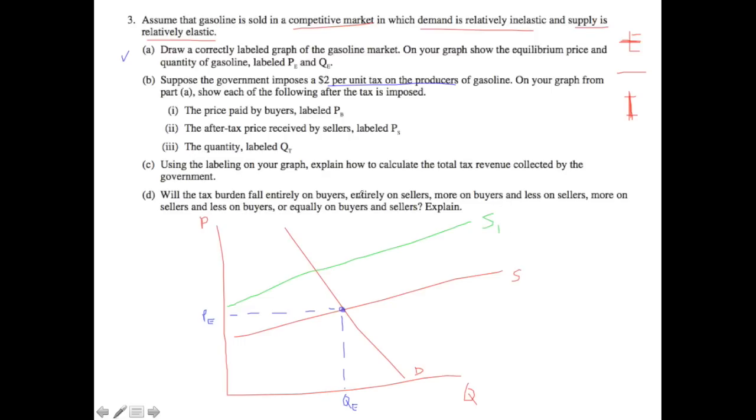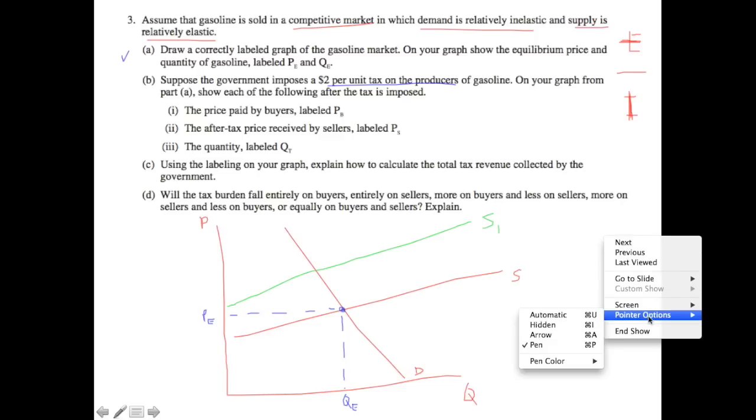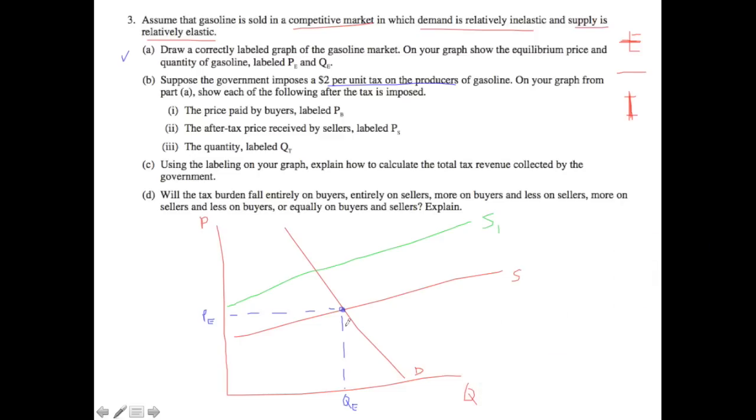Just imagine that that is parallel to the first supply curve. And essentially what we have now is we need to denote the price paid by buyers labeled PB, and the after-tax price by sellers as well as the quantity QT. So that's pretty simple. Again, I'm going to switch to blue. And that's going to be, we're going to look where, first of all, where S1 is equal to your original demand. That happens right here.